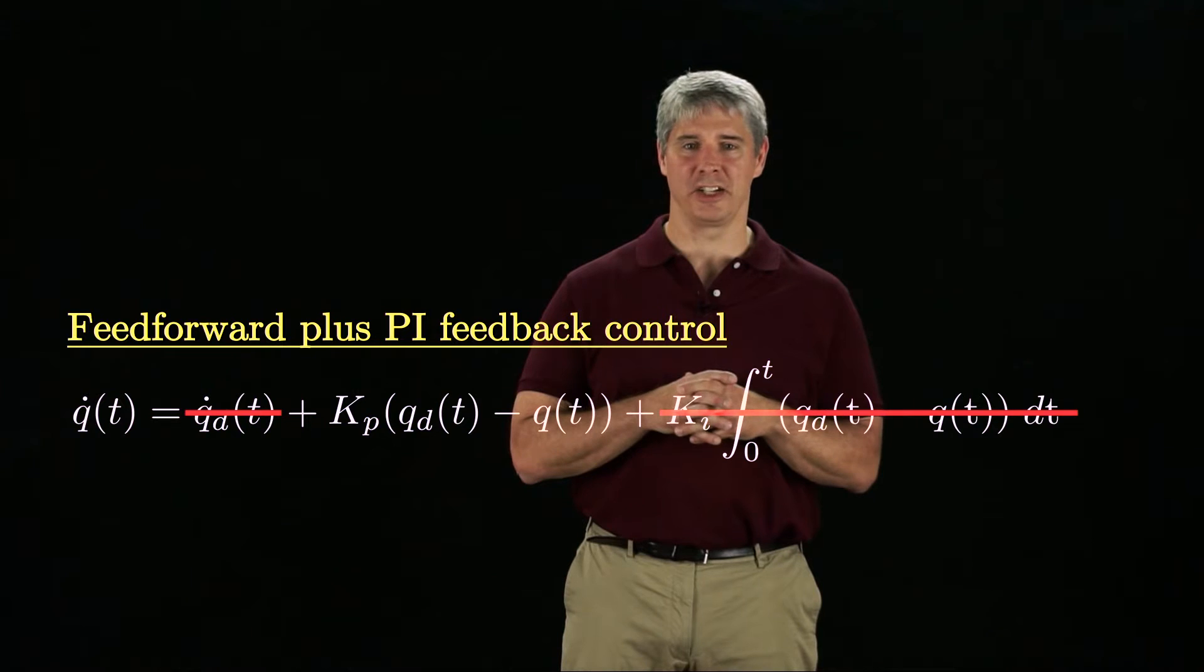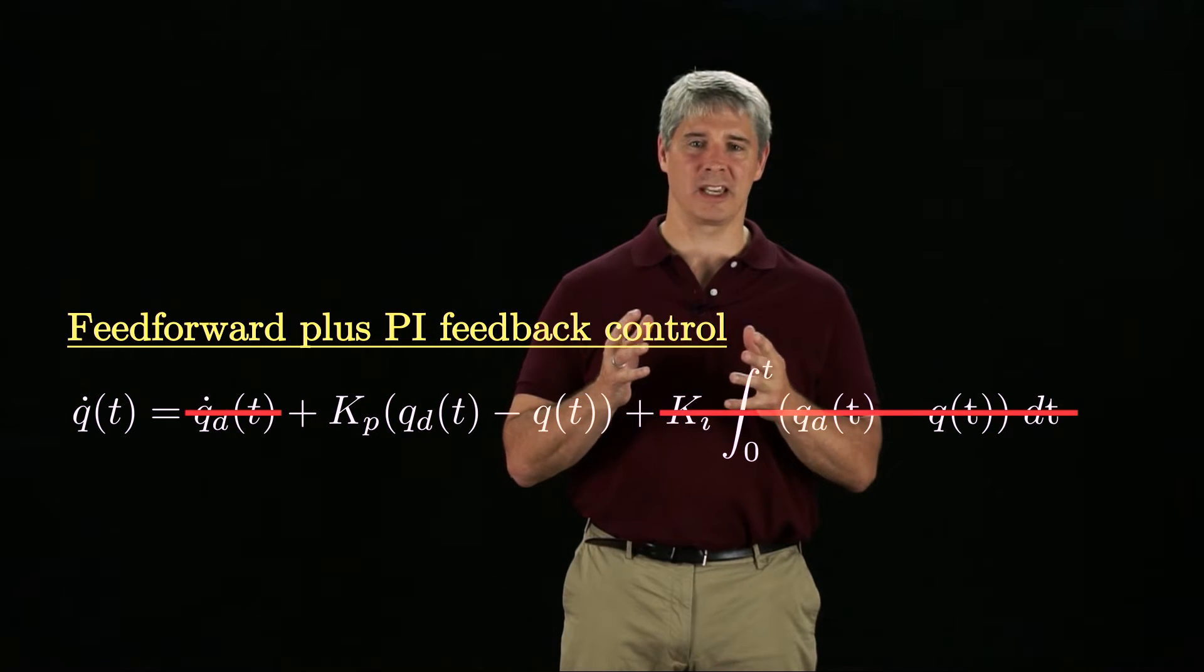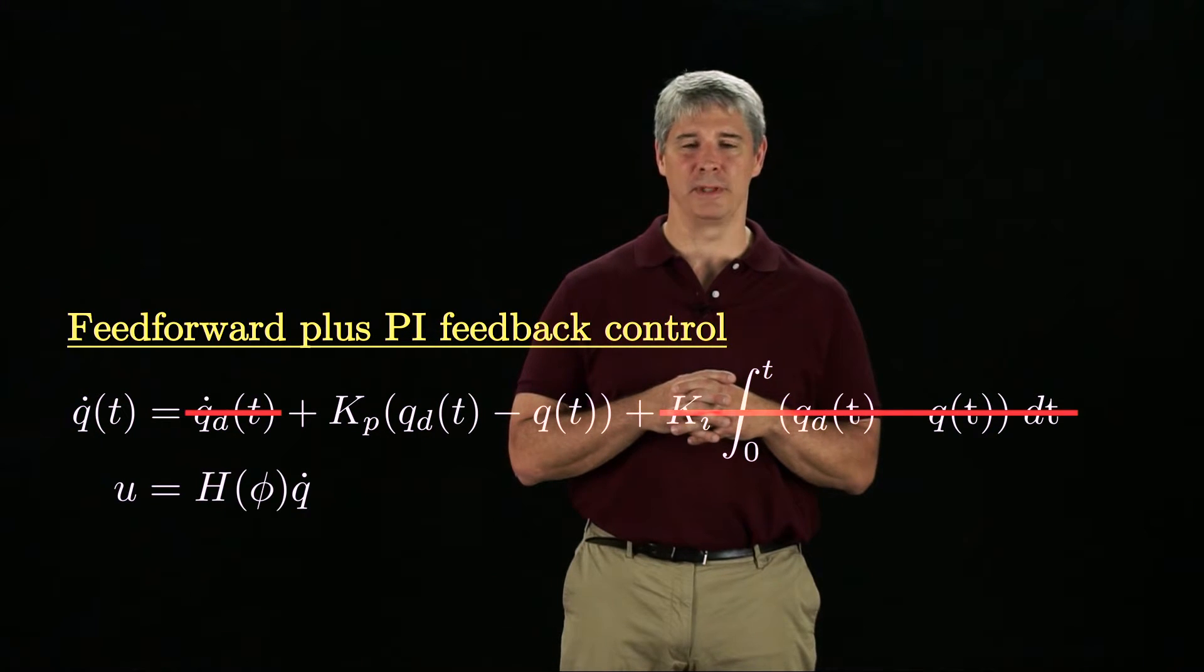Once the commanded chassis velocity q dot is calculated, we use the kinematic model to calculate the wheel speeds. If the wheels have bounded speeds, then the motion planner should take these into account. We can transform bounds on the wheel speeds to bounds on the chassis twist in the body frame.